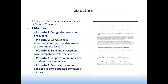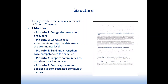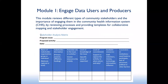The package is 33 pages with three annexes and is designed in the format of a how-to manual. It comprises five modules: the first is about engaging data users and producers; the second is about conducting data assessments to improve data use at the community level; the third is building and strengthening core competencies for data use; the fourth is about supporting communities to translate data into action; and the fifth is about ensuring systems and policies that support sustained community data use.